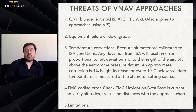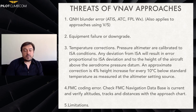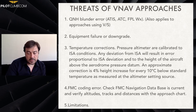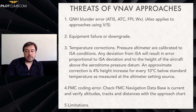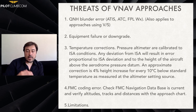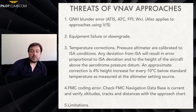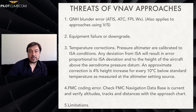Let's talk about the threats of VNAF approaches, which is really important. As we were saying about the QNH blunder error — it comes from different sources: the ATIS, the ATC, and the flight plan. Weather also applies to approaches using vertical speed. Equipment failure or downgrade can affect our VNAF approaches — that's another threat. As we were saying, the temperature corrections: the pressure altimeter is calibrated to standard conditions. Any deviation from standard will result in an error proportional to the ISA deviation and to the height of the aircraft above the aerodrome pressure datum. An approximate correction is 4% increase for every 10 degrees below standard temperature, as measured at the altimeter setting source.